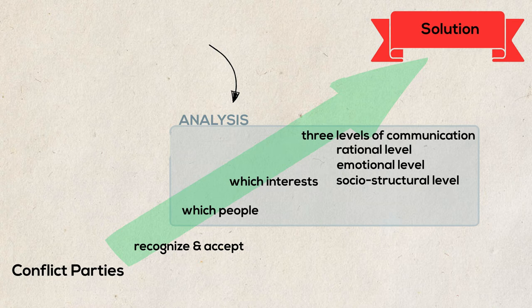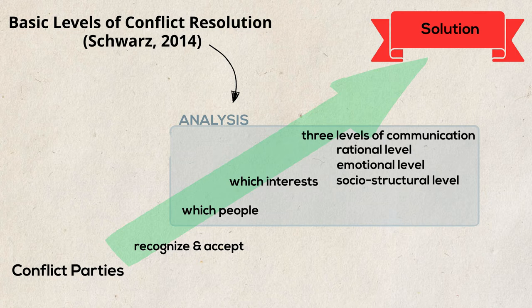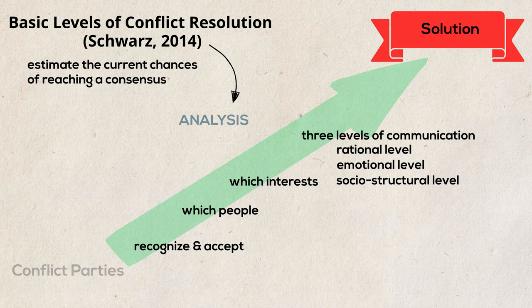He uses different levels to categorize the conflict resolution behavior of the parties. With the help of this model, one can estimate the current chances of reaching a consensus. According to Schwarz, all conflict resolution variants can be reduced to the following six-stage basic model.